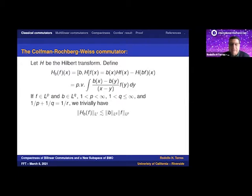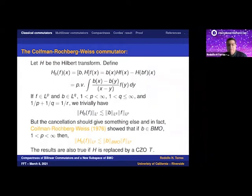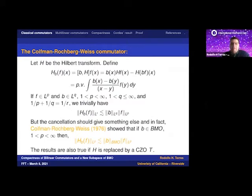That's what Coifman, Rochberg and Weiss discovered: if you take the symbol b in L∞, this trivially maps Lp into Lp. But you can actually put b in the larger space BMO and the estimate remains. They did this for the Hilbert transform, but there's nothing special about the Hilbert transform beyond it being a Calderon-Zygmund operator — so any Calderon-Zygmund operator has the same property.